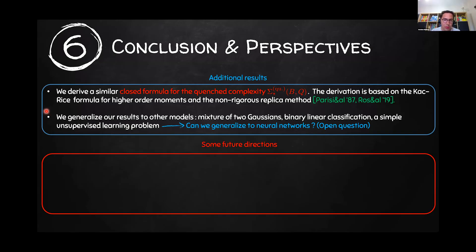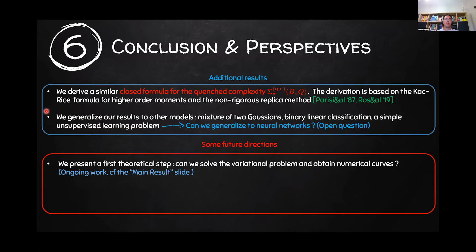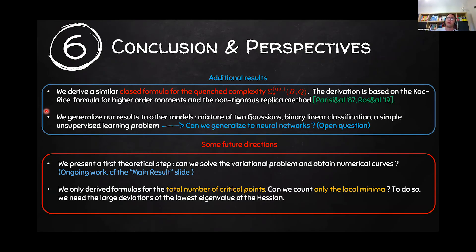Two future directions: First, the most obvious one is getting numerical curves of the topological transition in the landscape for different activation functions — this is ongoing work. Second, so far I have only mentioned counting the total number of critical points, but for local optimization you really care about counting local minima. From the Kac-Rice formula, counting local minima requires understanding the large deviations of the lowest eigenvalue of the Hessian — an open problem in random matrix theory. We believe we can address this using recent techniques in large deviations, and this is ongoing work that should hopefully appear soon.